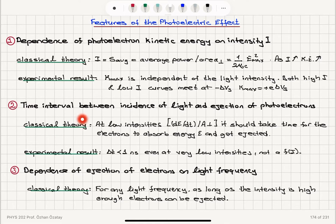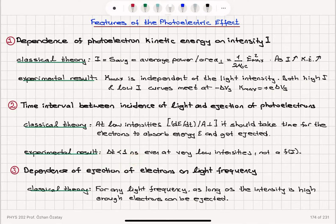The second important problem is the time interval between incidence of light and ejection of photoelectrons. Classical theory says that at very low intensities, the rate of energy change per perpendicular area is very low, so it should take time for electrons to absorb enough energy to be ejected. Experimentally, the ejection time is on the order of 1 nanosecond, even at very low intensities — it is not a function of intensity. We observe very fast ejection of photoelectrons independent of intensity.